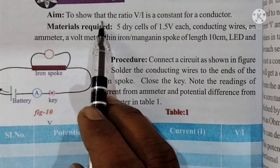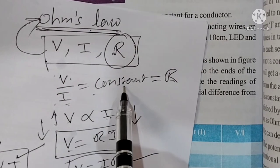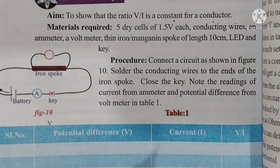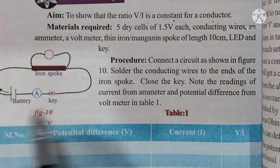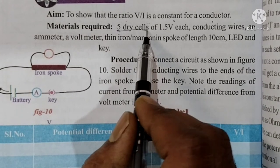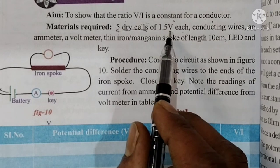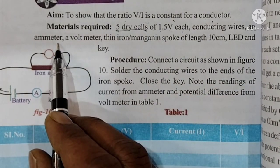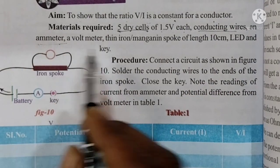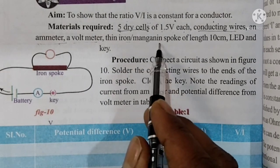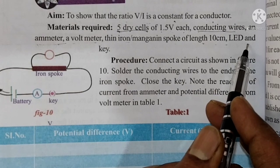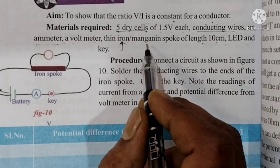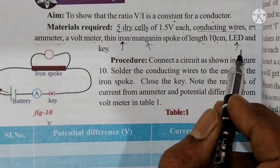To show that the ratio of V by I is constant for any conductor — V by I equals constant. Now let's look at the materials for a simple circuit: 5 dry cells, each 1.5 volts, totalling 7.5 volts. Conducting wires, 1 ammeter, 1 voltmeter, an iron manganin spoke of length 10 centimetres, an LED, and 1 key.